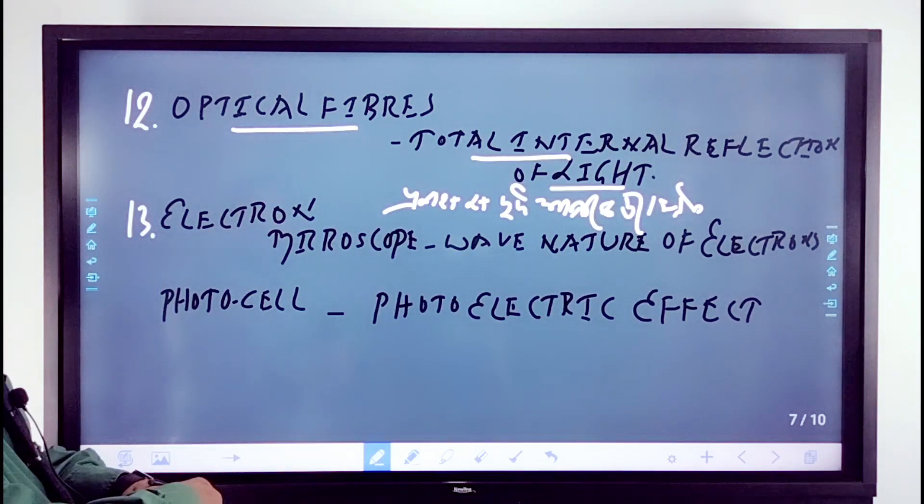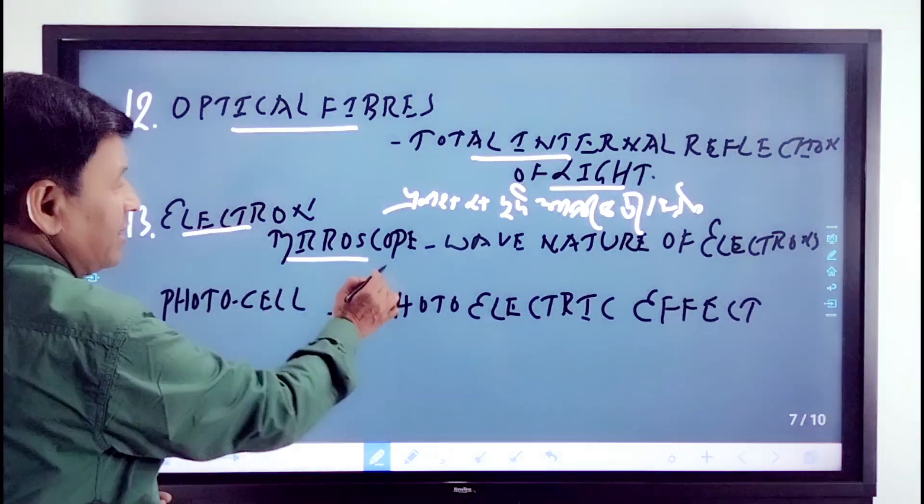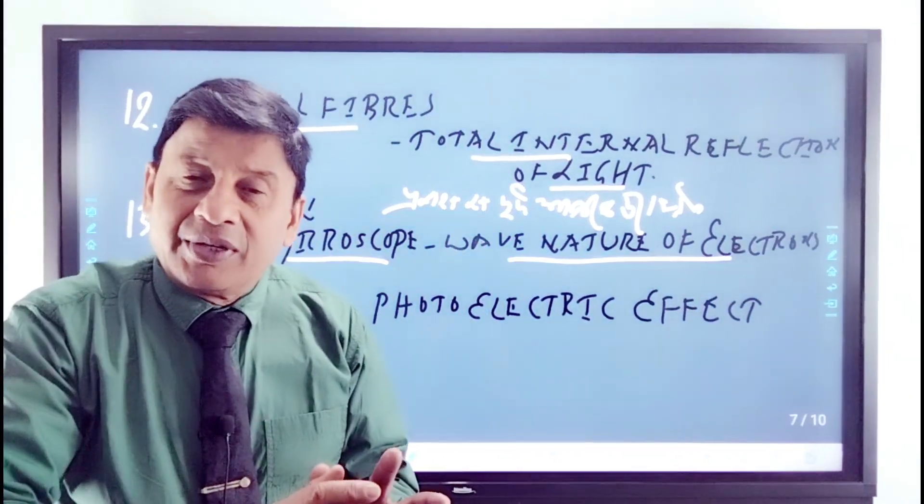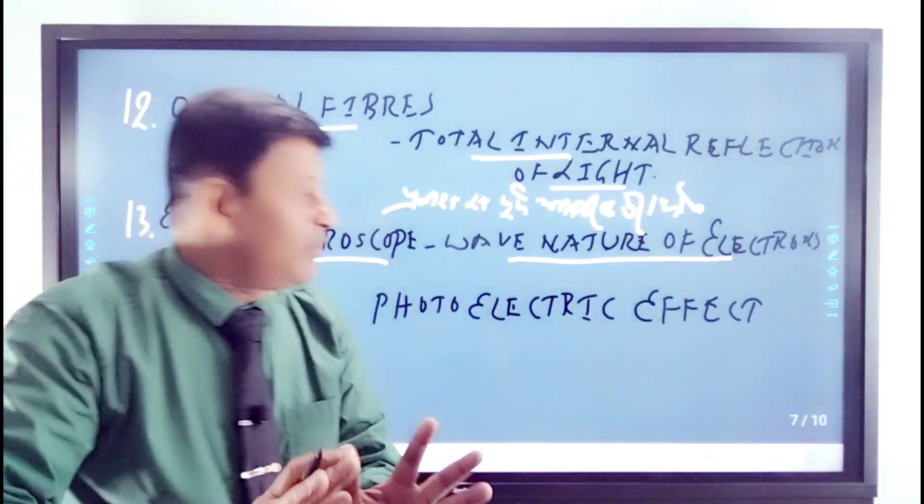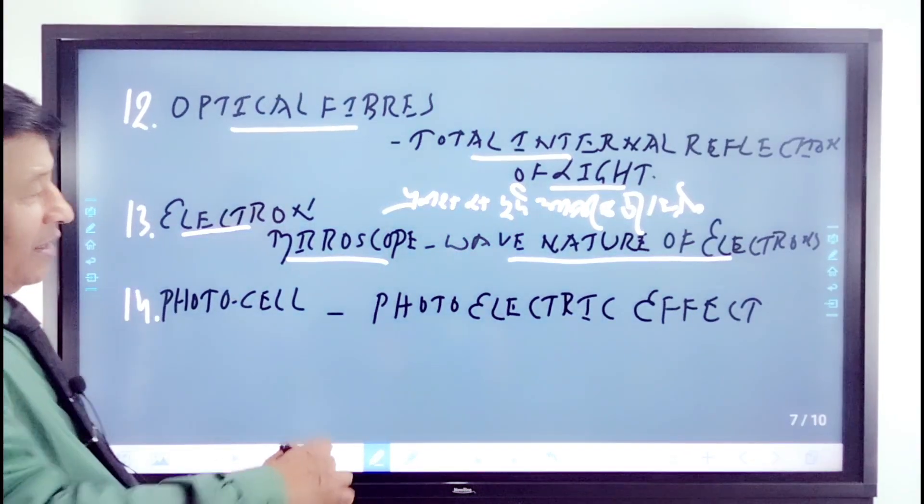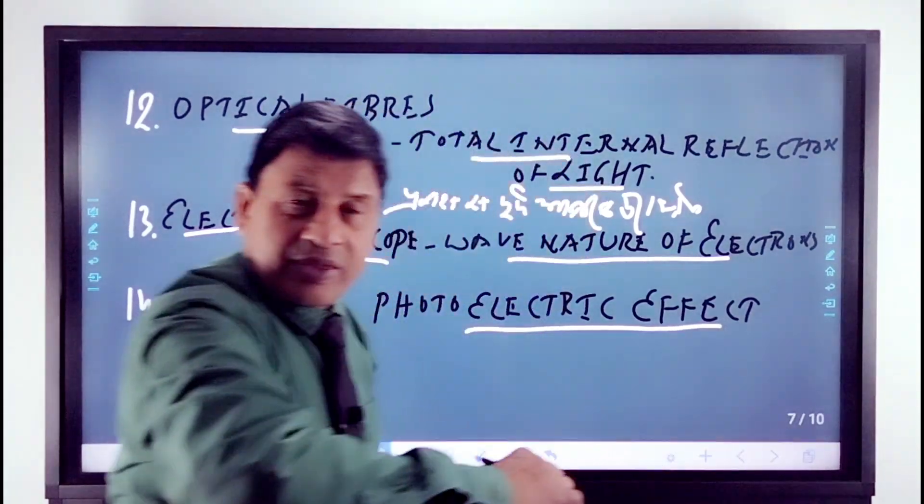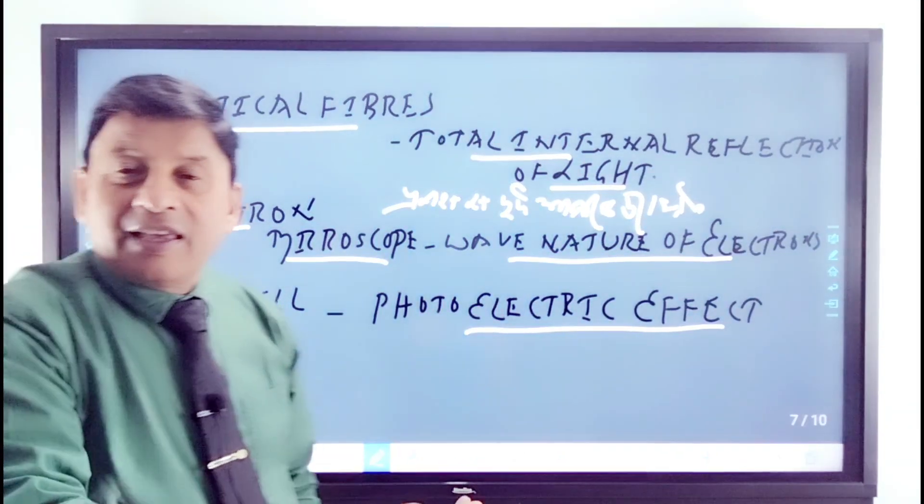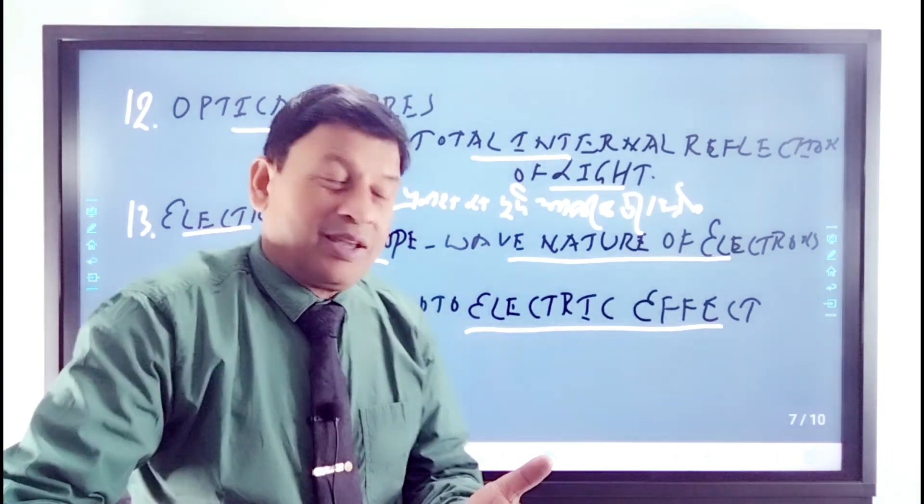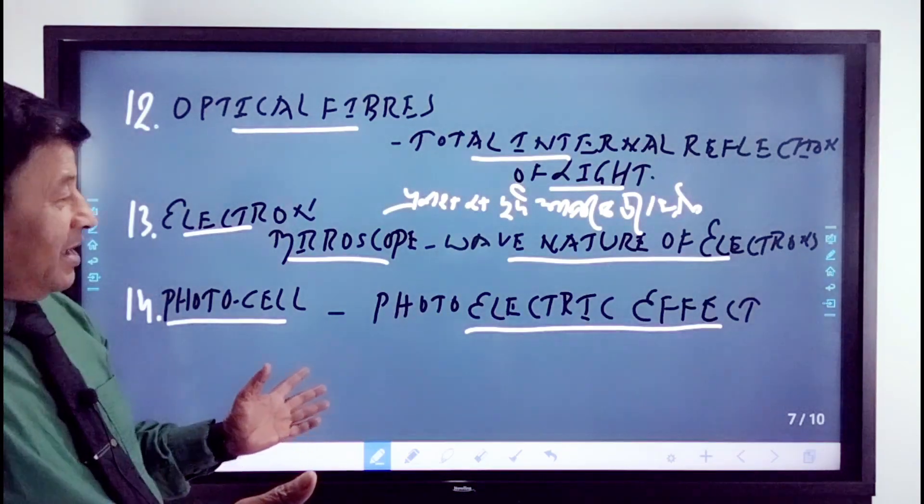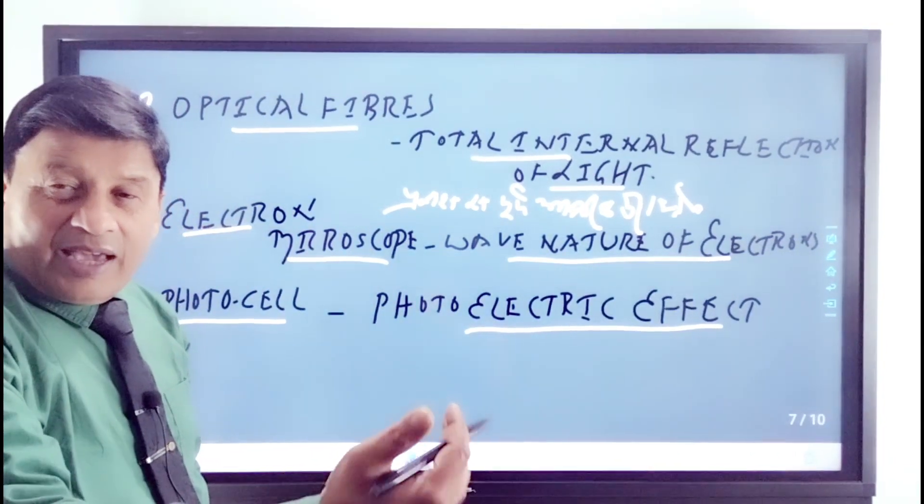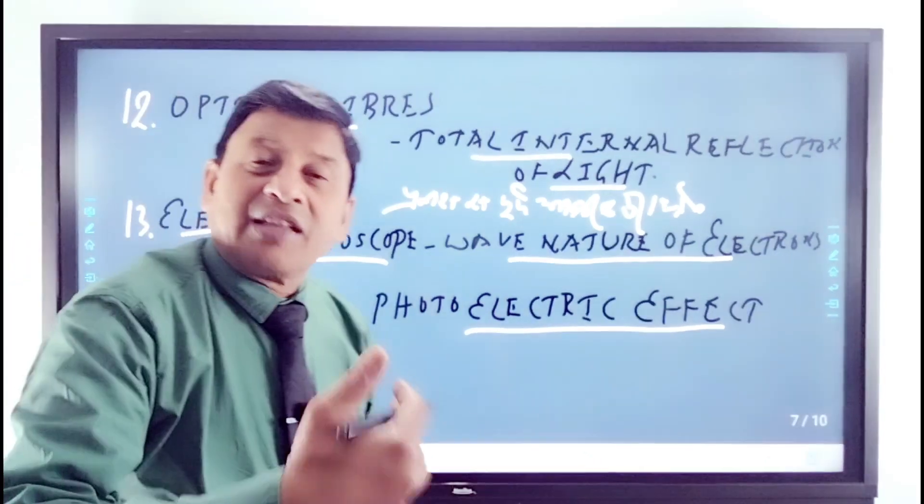Electron microscope. Electron microscope works on the principle of wave nature of electron. Fourteen: photocells. This works on the principle of photoelectric effect. Photoelectric effect. You will see what photocell is. This is also a favorite topic.